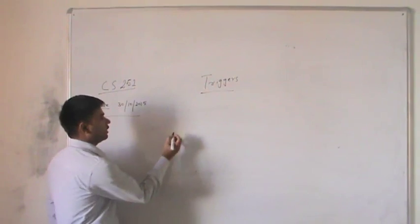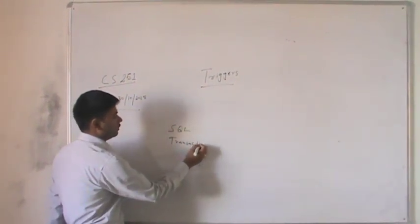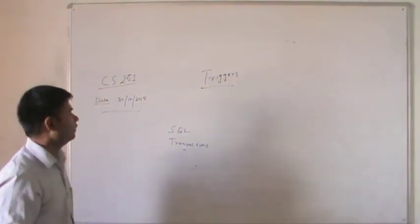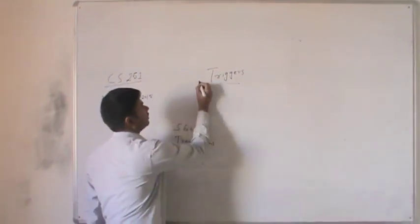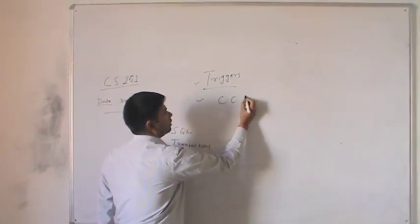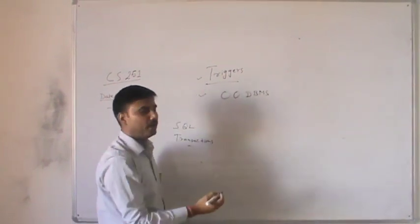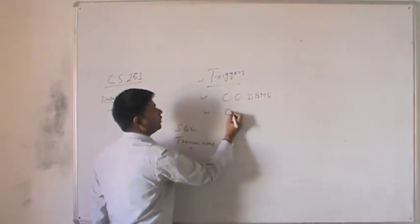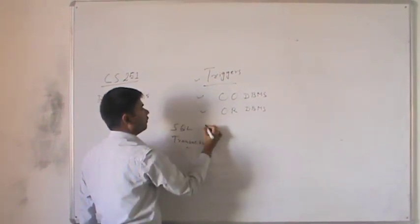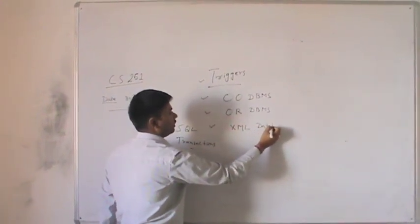We have already discussed about SQL transactions in our previous session. In the next session, we will discuss about the triggers. We will also discuss about the object-oriented database management systems. We will also discuss object-relational database management systems. And finally, we will discuss XML databases.